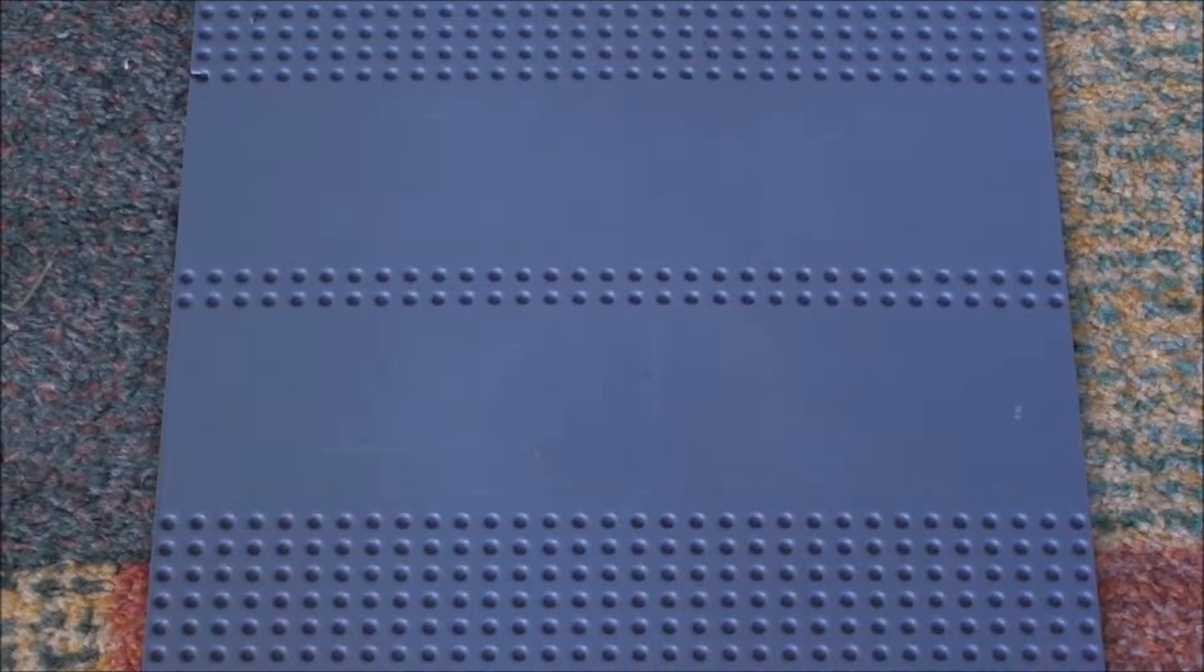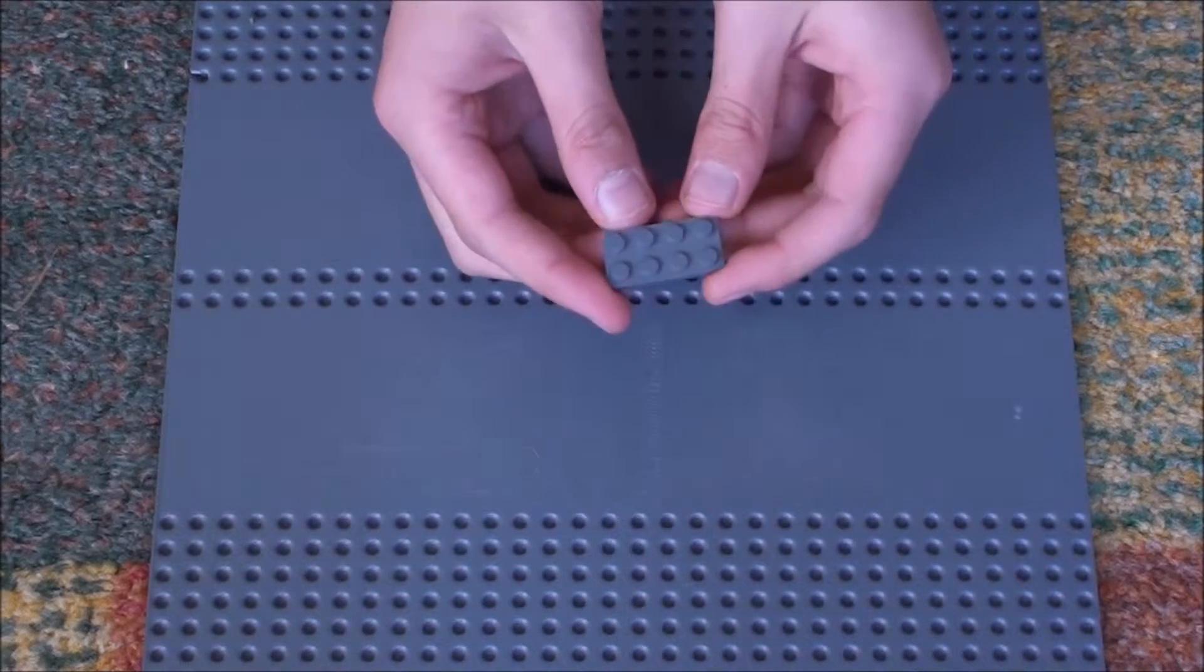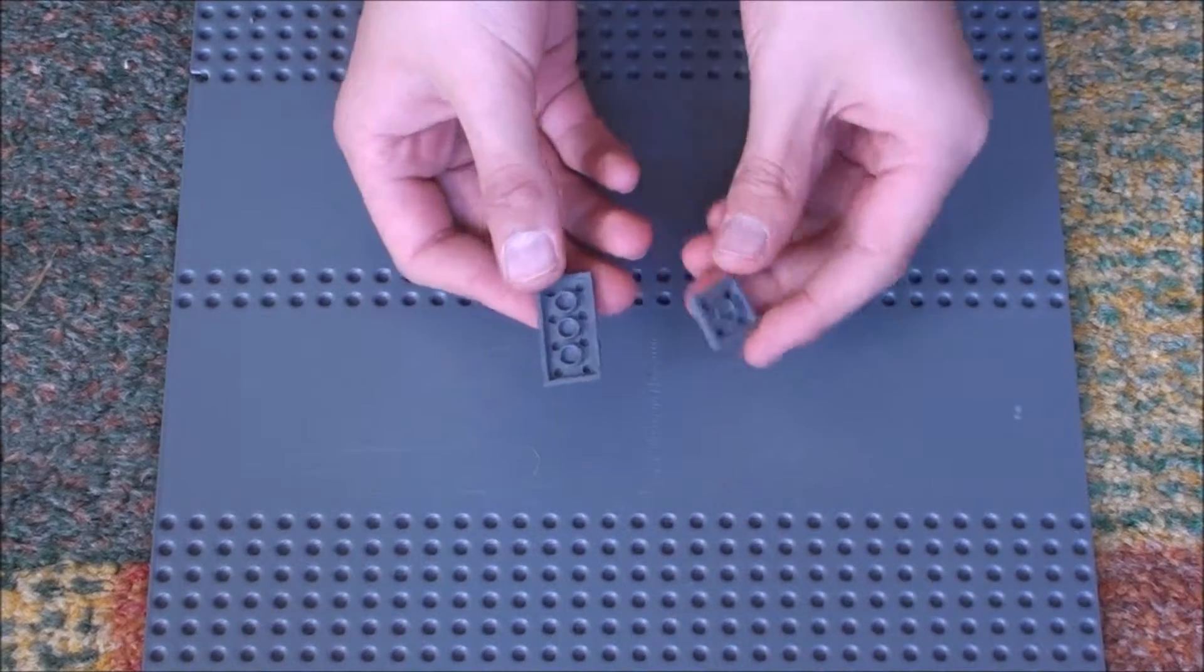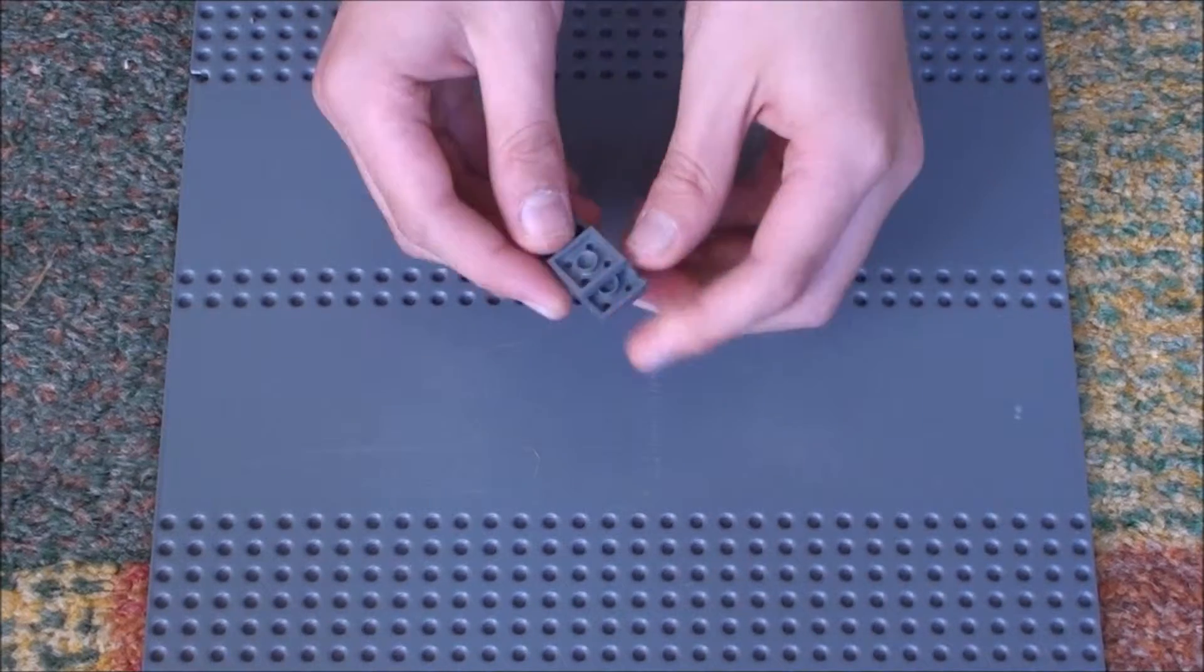Okay, to start with you get this 2x4 dark grey plate and put a 2x2 plate on the bottom like that.